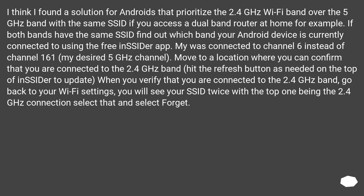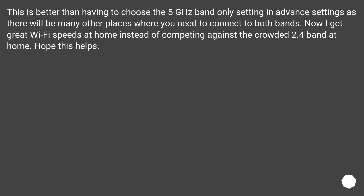When you verify that you are connected to the 2.4GHz band, go back to your Wi-Fi settings. You will see your SSID listed twice, with the top one being the 2.4GHz connection — select that and choose 'Forget'. This is better than choosing the 5GHz-only setting in advanced settings, as there will be many other places where you need to connect to both bands. Now I get great Wi-Fi speeds at home instead of competing against the crowded 2.4GHz band.